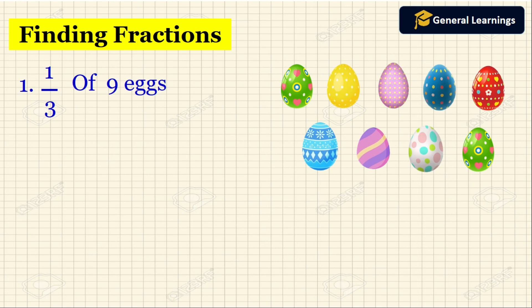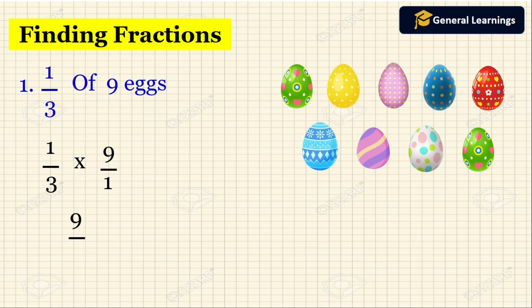Now we will see another one. They have given 1 by 3 of 9 eggs. We need to find 1 by 3 of 9 eggs. First we write 1 by 3 as it is, then multiply. If the whole number does not have a denominator, we consider it as 1. Multiply the numerators: 1 into 9 is 9. Multiply the denominators: 3 into 1 is 3. Now divide 9 by 3. We get 3. So the answer is 3 eggs.